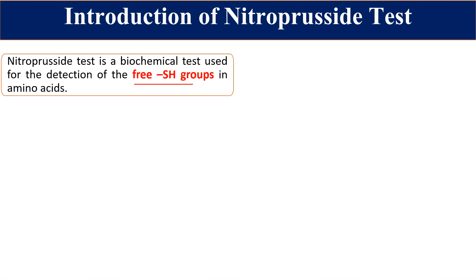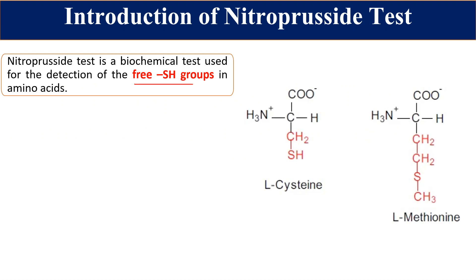If you look at our amino acids, we have 20 amino acids. Among those 20, there are 2 amino acids which contain sulfur. Cysteine contains a terminal SH group — that is the sulfhydryl group. Methionine contains sulfur in the middle of its chain, called thioether sulfur. So two different types of sulfur are present in these amino acids.